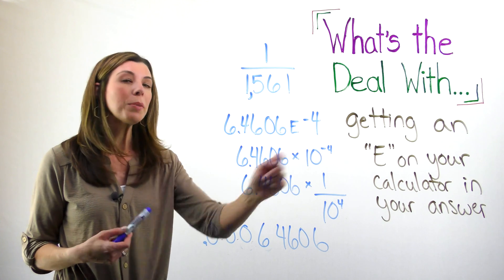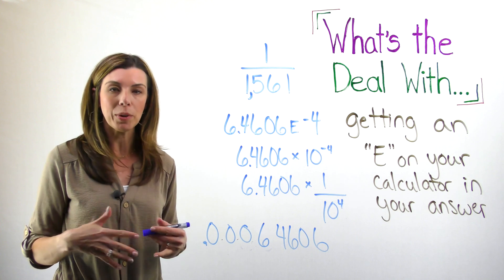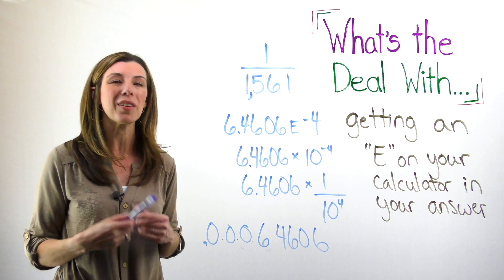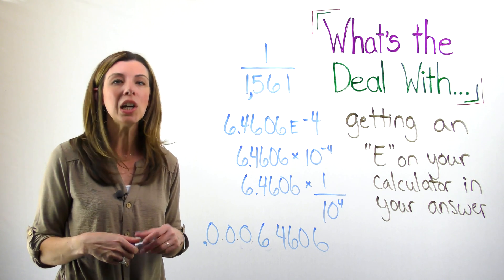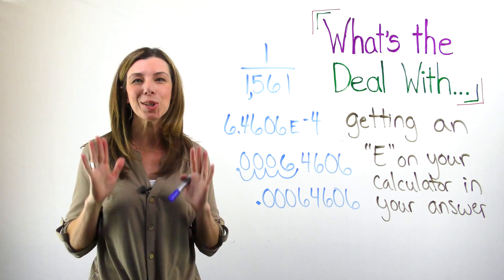Now, this could also be a positive exponent and that would mean it's a really large number. Your calculator is trying to give you a hint. Hey, this is a super small number or this is a really big number. That's why we use scientific notation so that we don't have to write all these zeros and keep on going. So to recap,